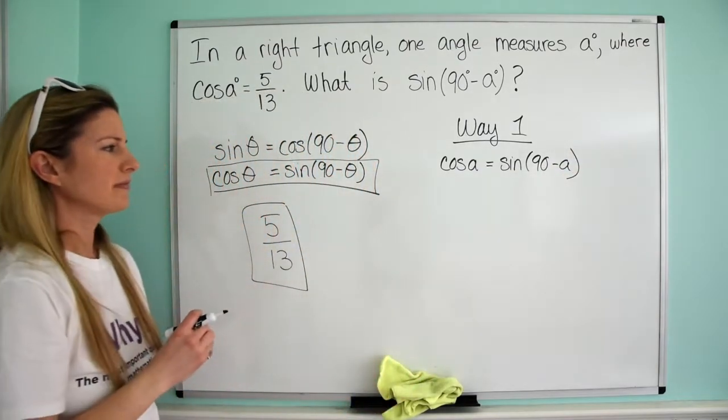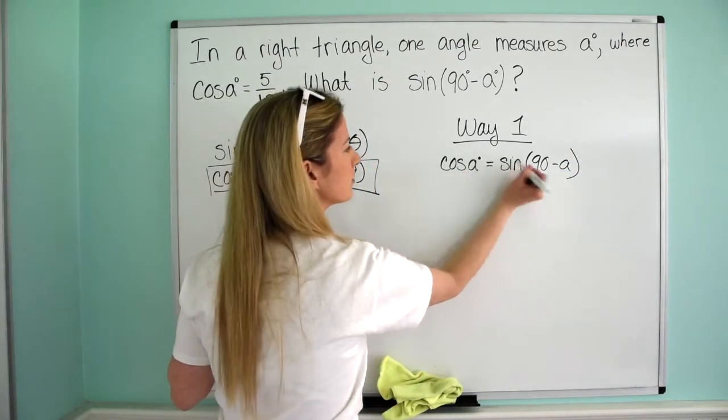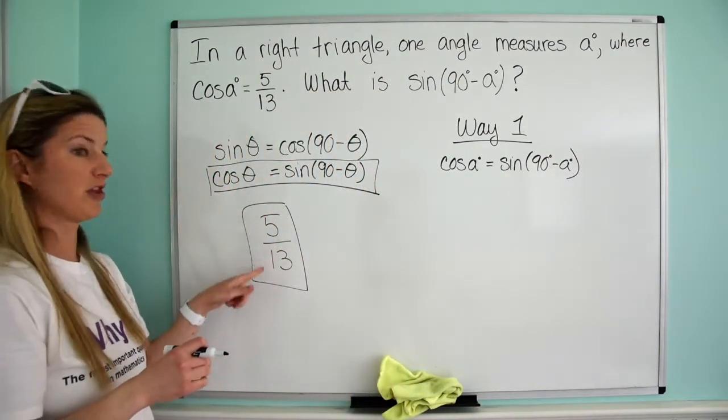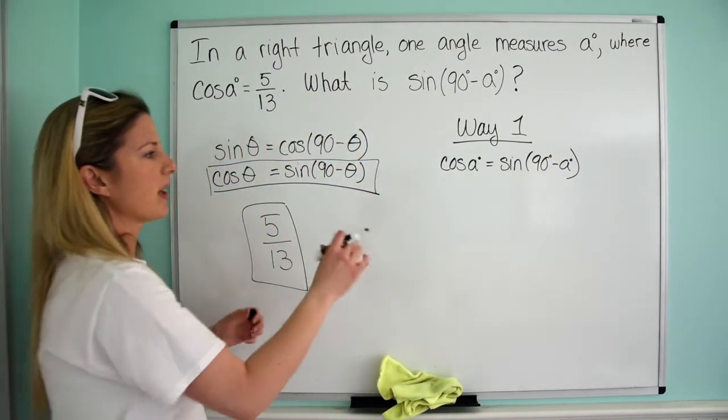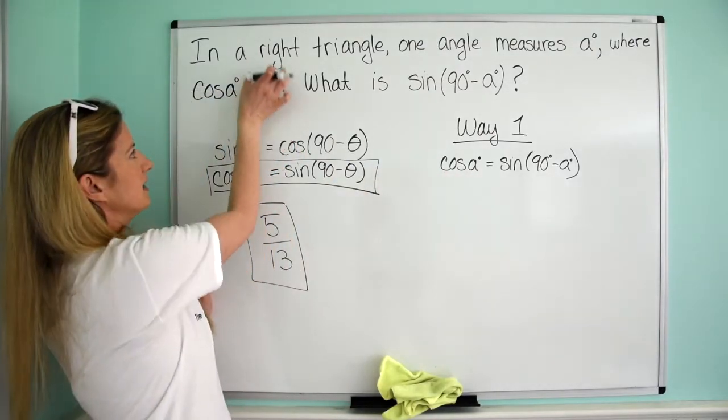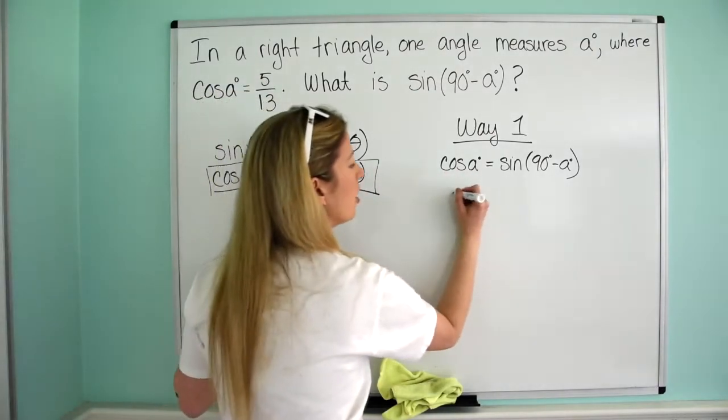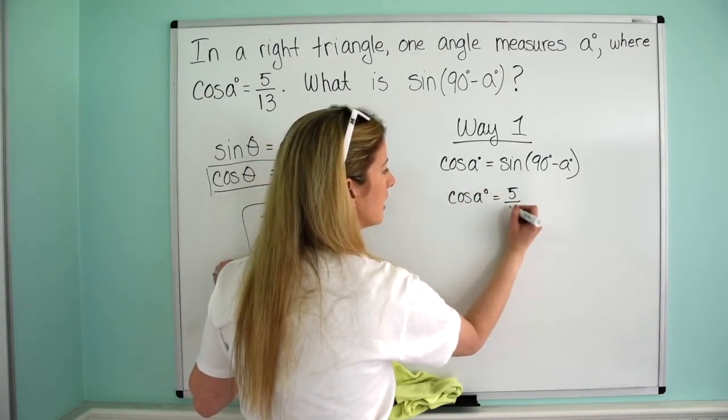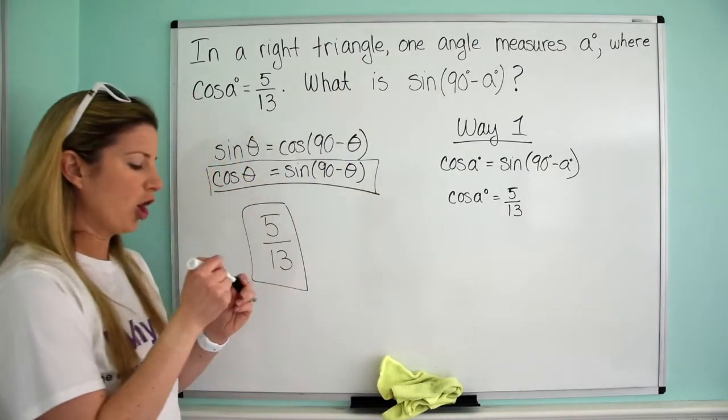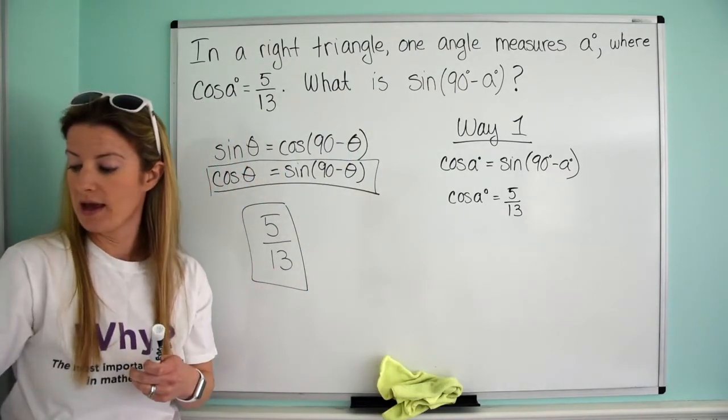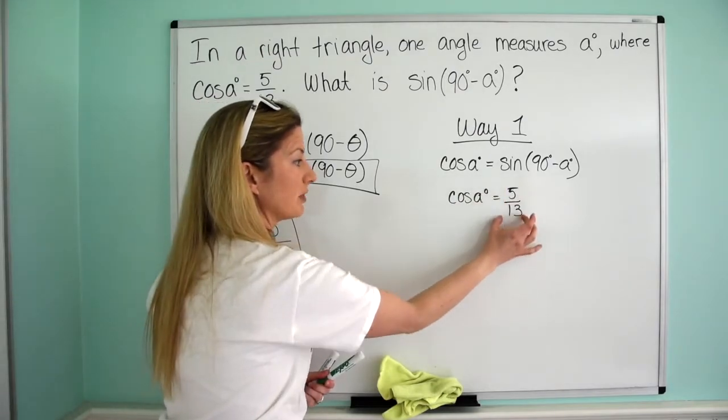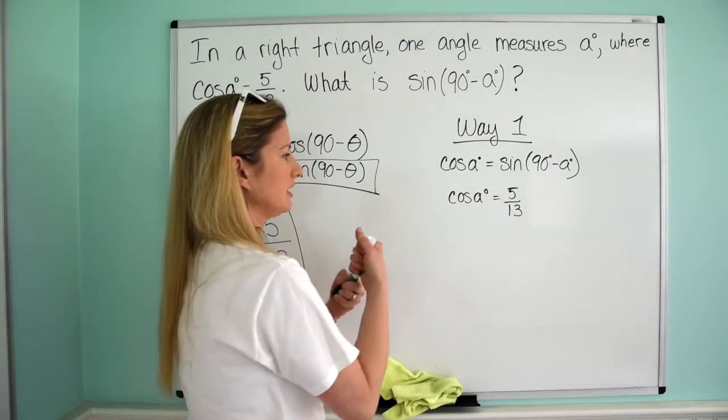What it says is that the cosine of A is going to equal the sine of 90 minus A. I mean, I probably should have degrees in there, you know, just to be correct. But remember, this is the SAT, so they just care about the number, the answer. So now I know what the cosine of A is. It's 5 over 13.